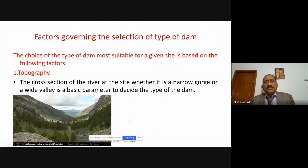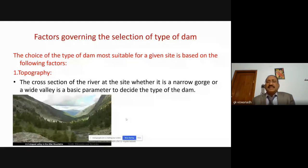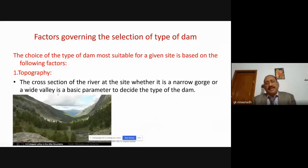Is there any specific recommendation that a particular type of dam should be suitable at a particular place? The choice of the type of dam most suitable for a given site actually depends on several parameters. Look at the topography — the cross section of the river at the site, whether it is a narrow gorge or a wide valley, is a basic parameter to decide the type of dam.